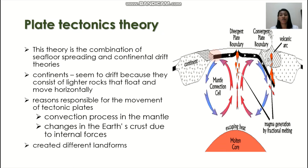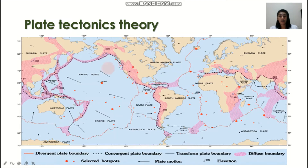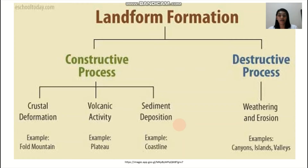Another reason is the changes in the Earth's crust due to internal forces, which have also created different landforms. In this world map, you would see different colors and lines. The red lines represent divergent plate boundaries, the dotted lines represent convergent plate boundaries, and the straight black lines represent transform plate boundaries. These different plate boundaries are responsible for the formation of different landforms. Generally speaking, there are two processes involved in landform formation: the constructive process and the destructive process. For the constructive process, you have crustal deformation, volcanic activities, and sediment deposition. For the destructive process, we have weathering and erosion.